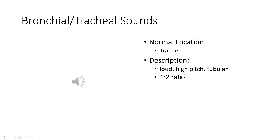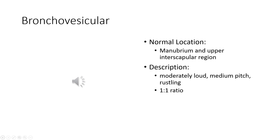Bronchovesicular sounds we hear more over the manubrium or the upper interscapular region. That makes sense because if you remember your anatomy, that's kind of where the upper bronchioles are located. So we have this moderate, medium-pitched sound over there. Because we're not exactly on the lung segments yet — we're still in the primary bronchi — that sound is going to be moderate in volume, medium pitch, and you might hear a little bit of rustling. Over those regions you're going to hear a one-to-one ratio: inspiration and expiration appreciated similarly.